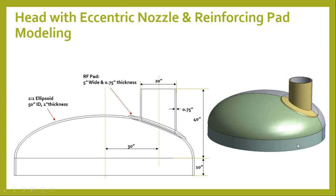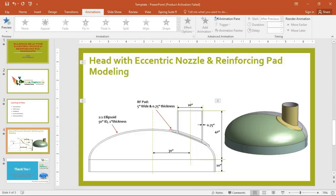This slide represents the problem definition: head with eccentric nozzle and reinforcing pad modeling. This is your 2:1 ellipsoid head. The eccentric nozzle is offset 30 inches above the center axis and may contain an RF pad 5 inches wide and 0.75 inch thick. The nozzle is 20 inch outer diameter with 0.75 inch thickness. The vessel is 50 inch ID with 1 inch thickness. We will model this from the 2D drawing, focusing on how to model the RF pad on an ellipsoid shape.